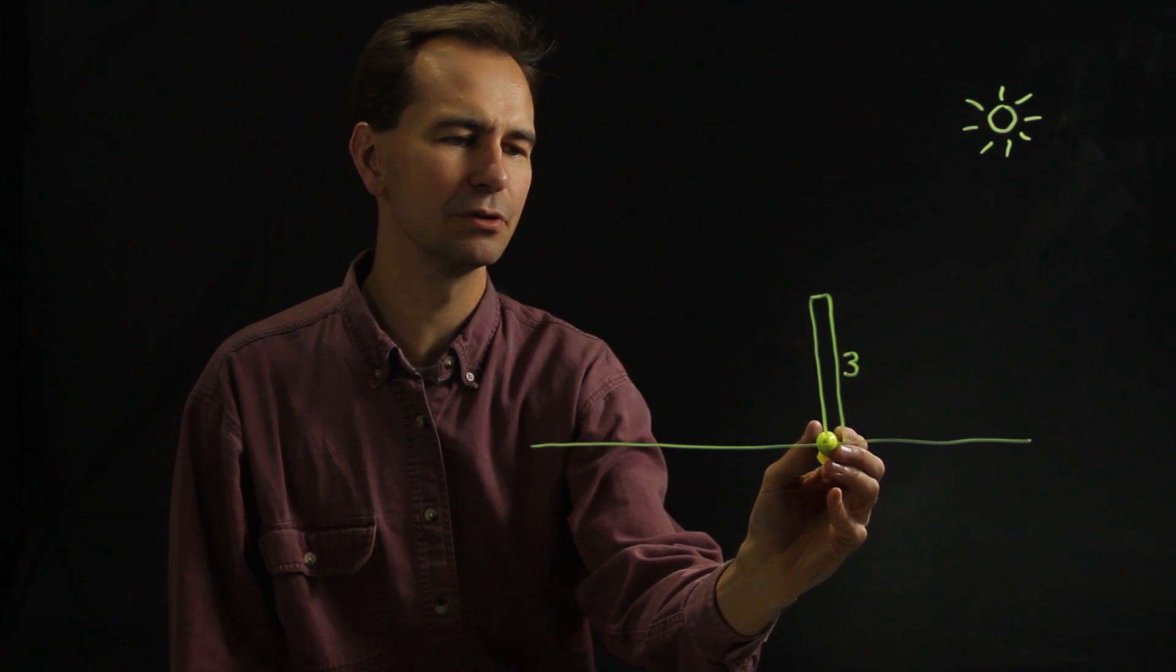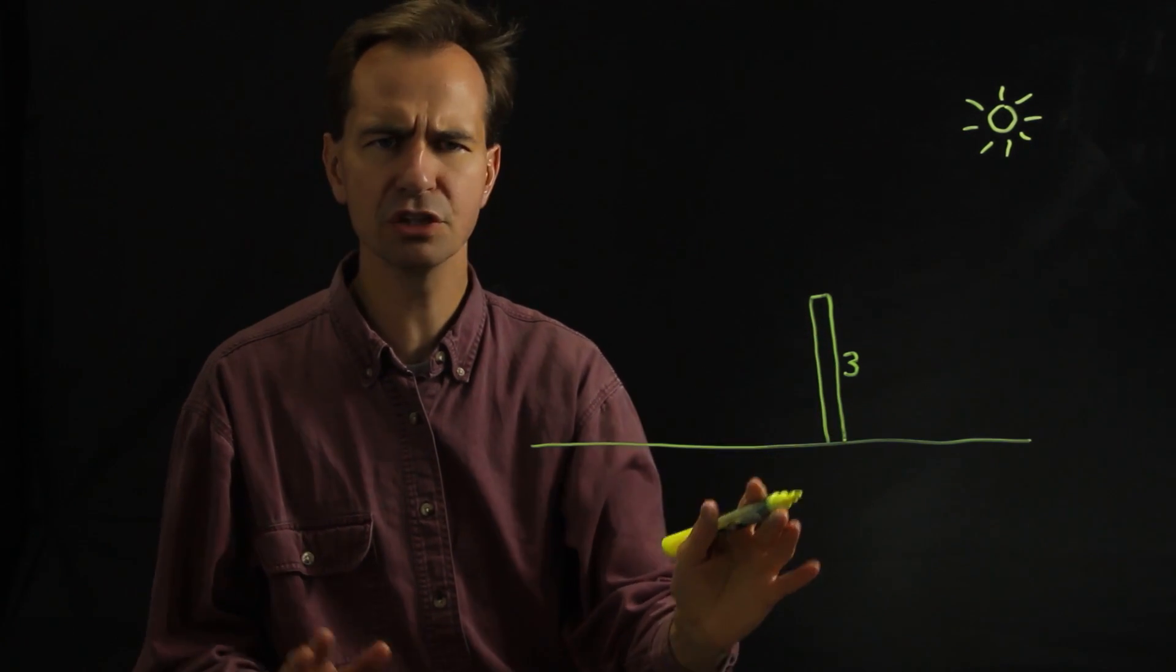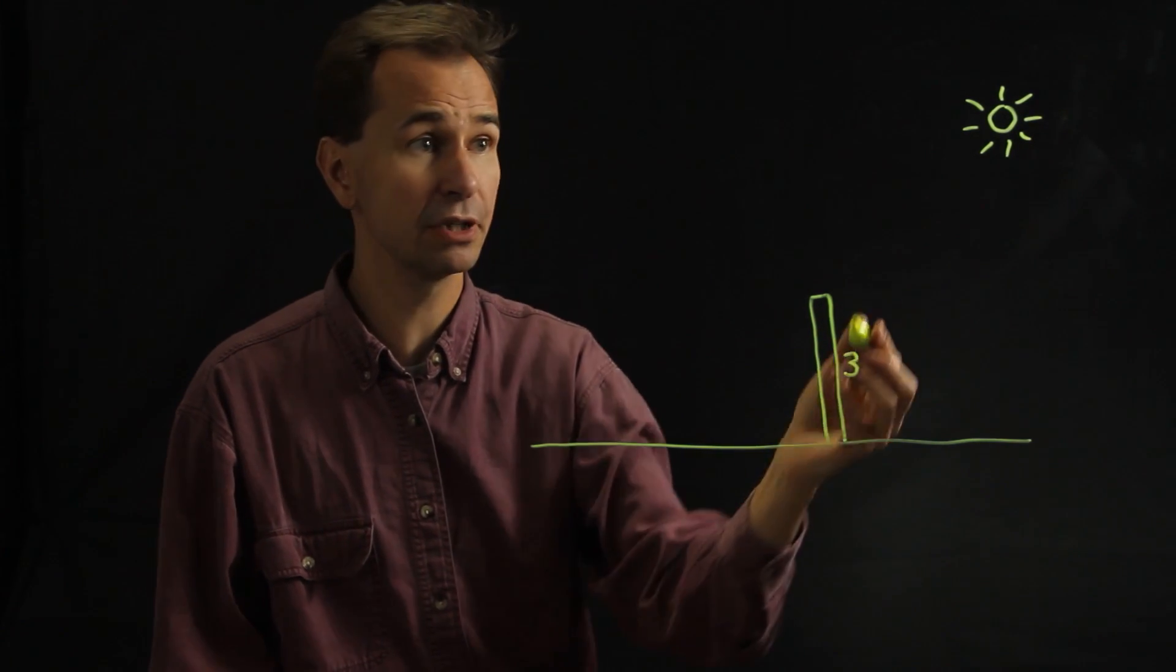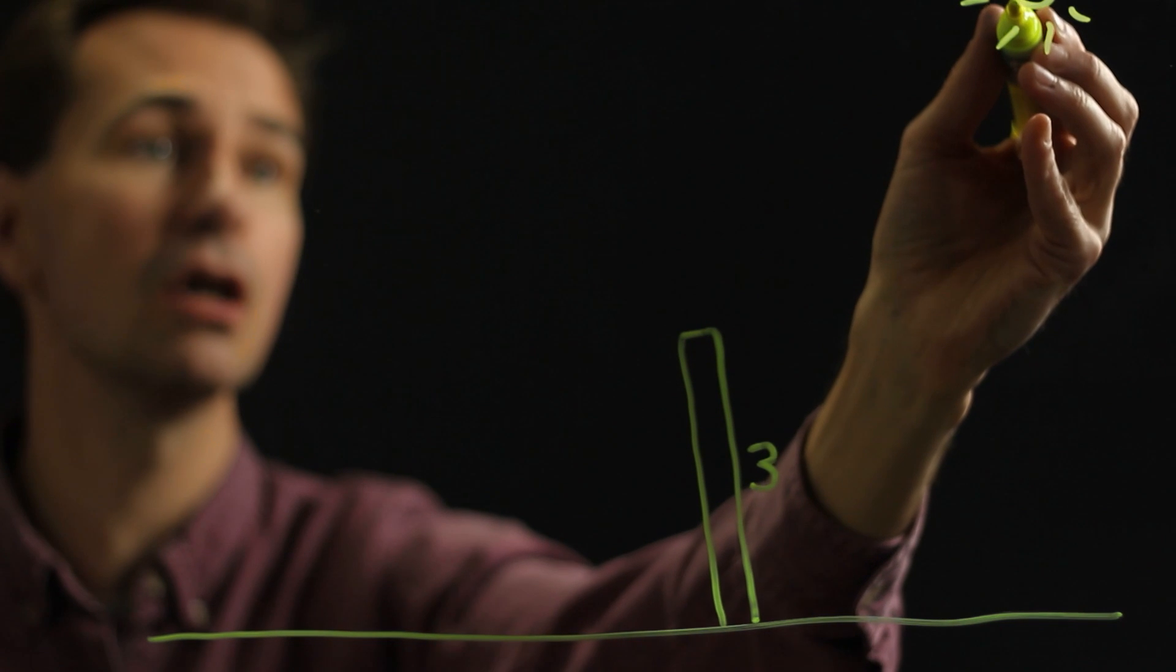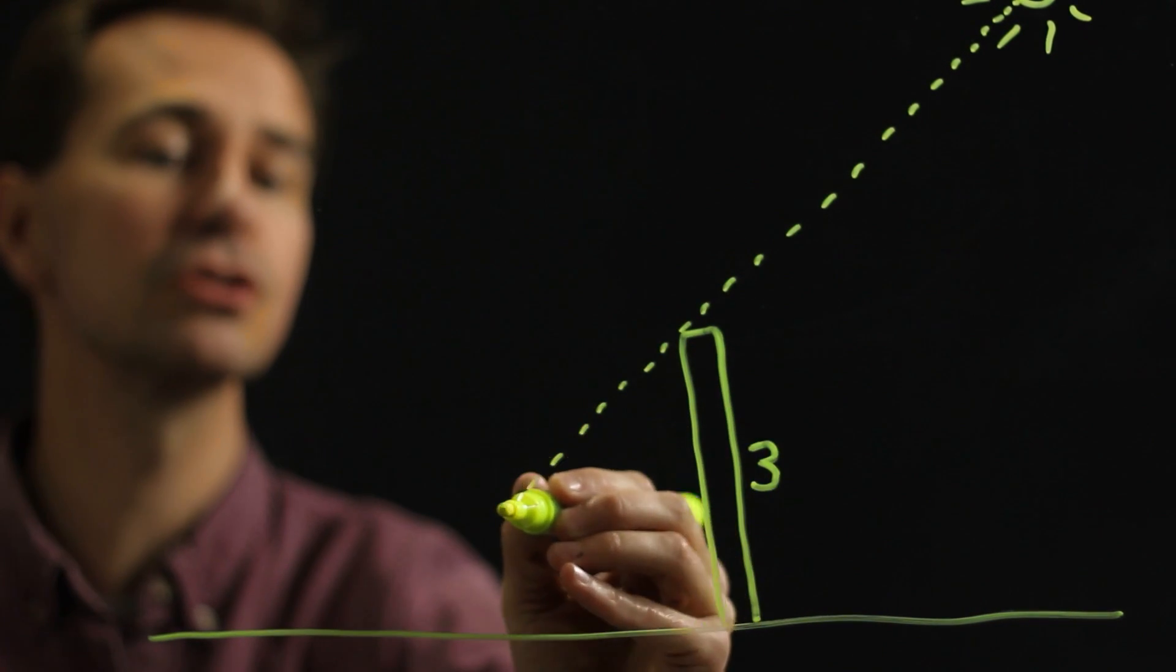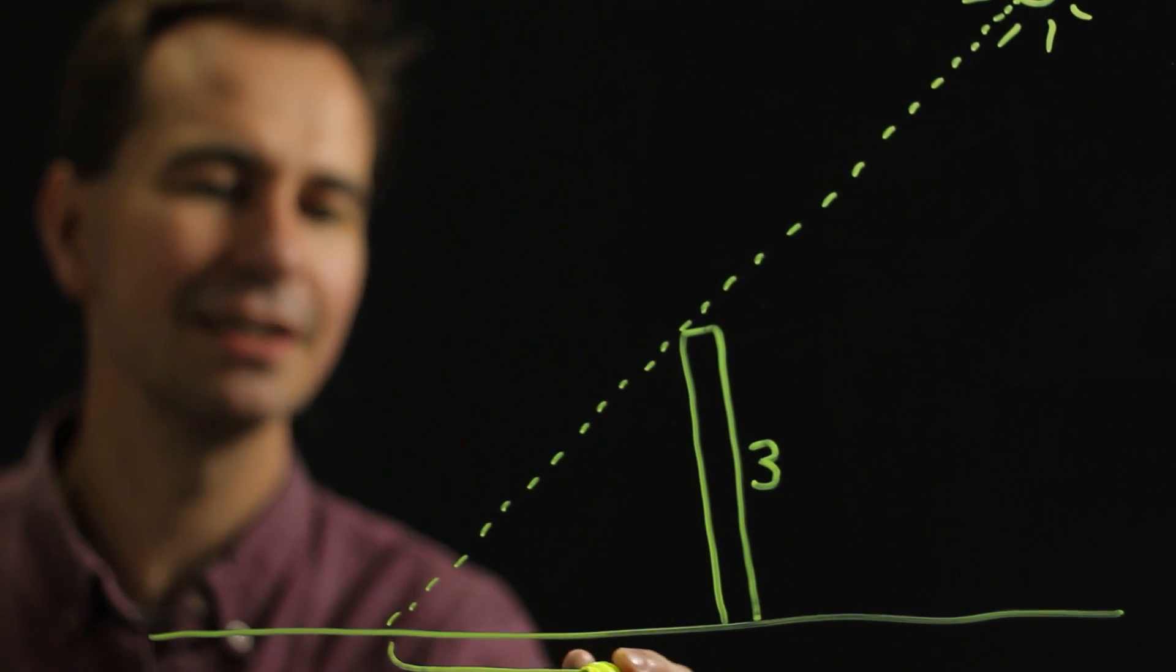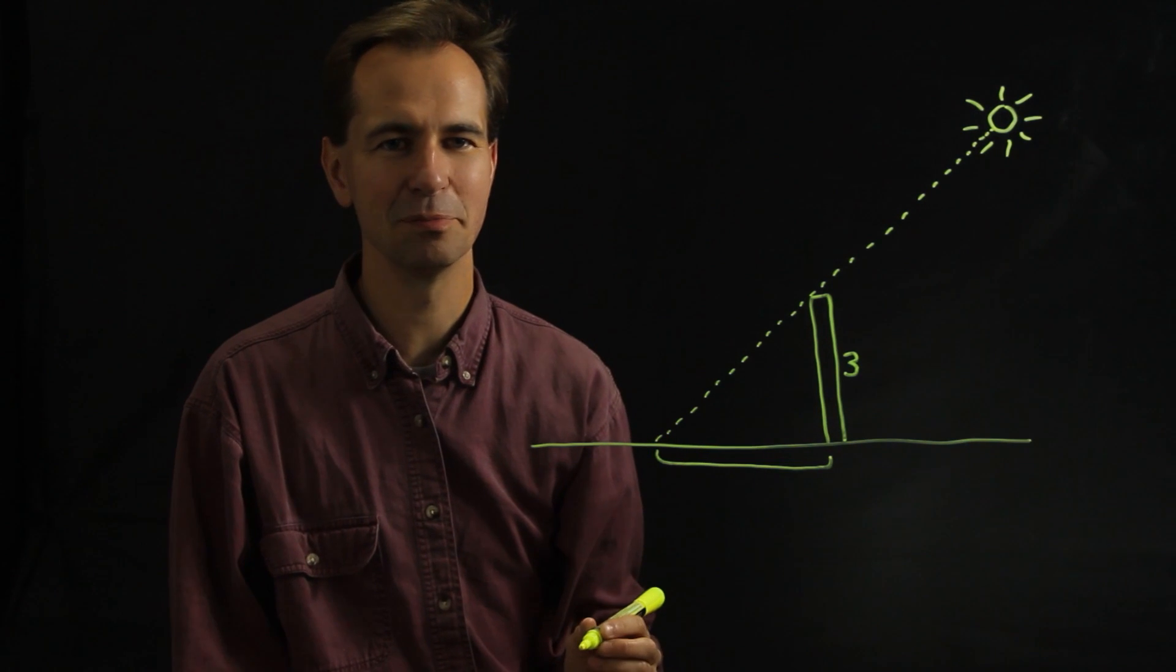and you take out another ruler. Before we talk about the shadow, where would the shadow fall? Well, it's pretty easy to figure that out. You just draw a line from the Sun across the top of the fence post all the way to the ground like that. So in this case, that's how long the shadow would be.